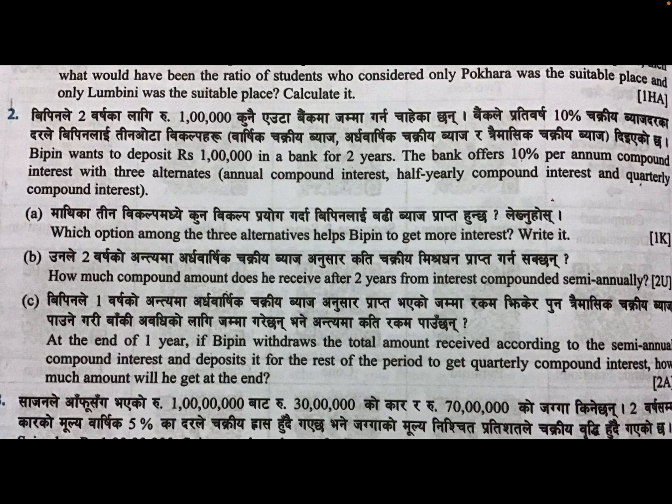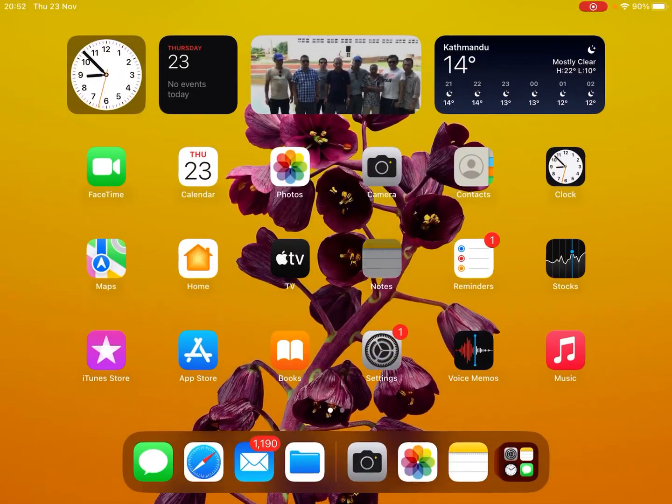Number A: which option among the three alternatives helps BPN to get more interest? Write it. This is one mark knowledge type question. So let us write its answer first of all. Then after that we will look at number B.